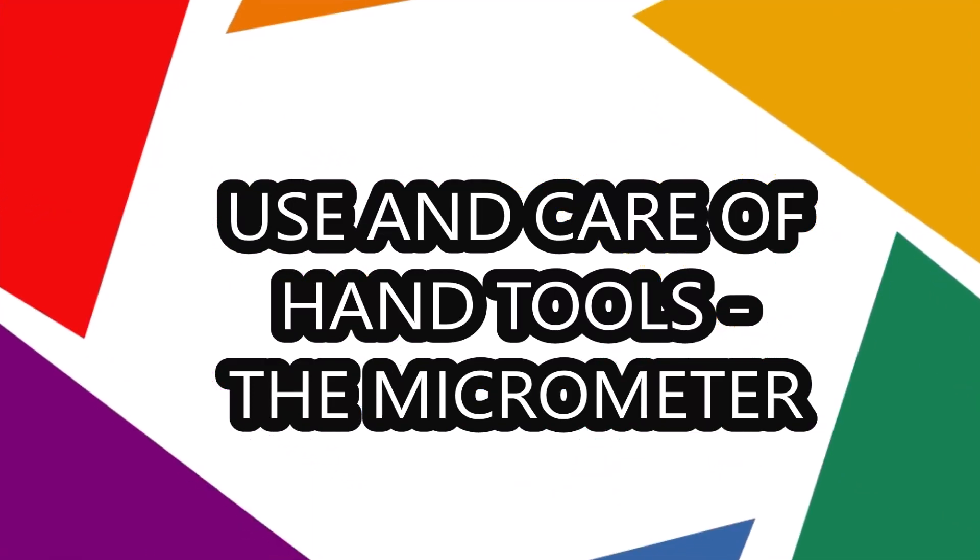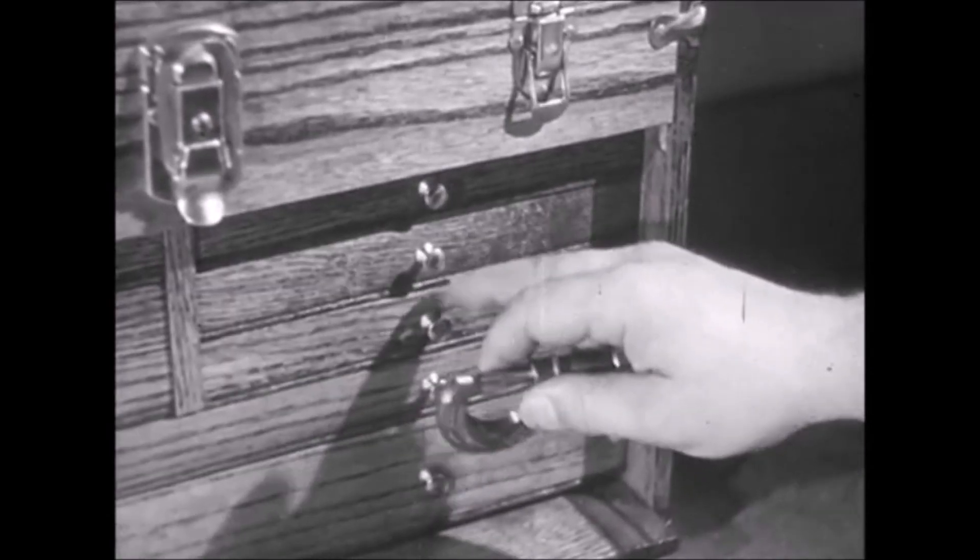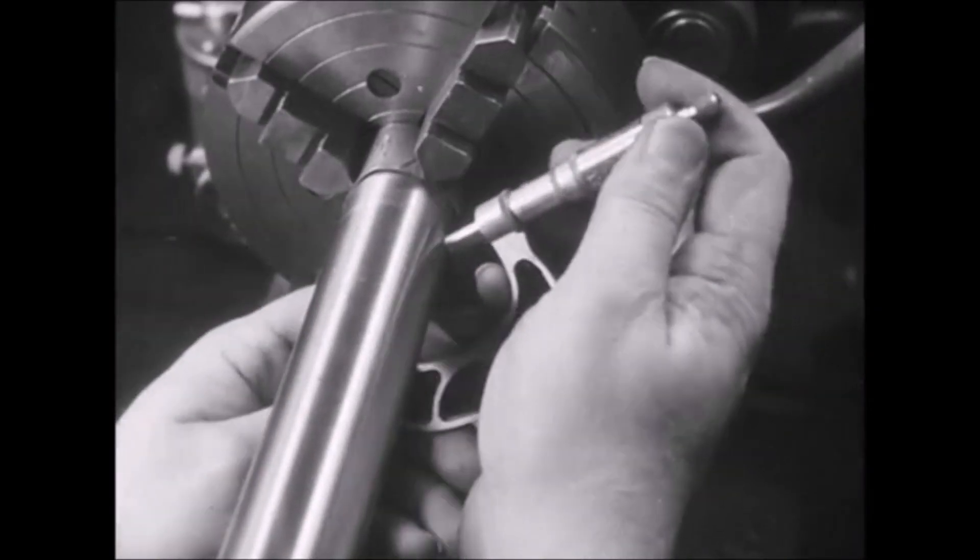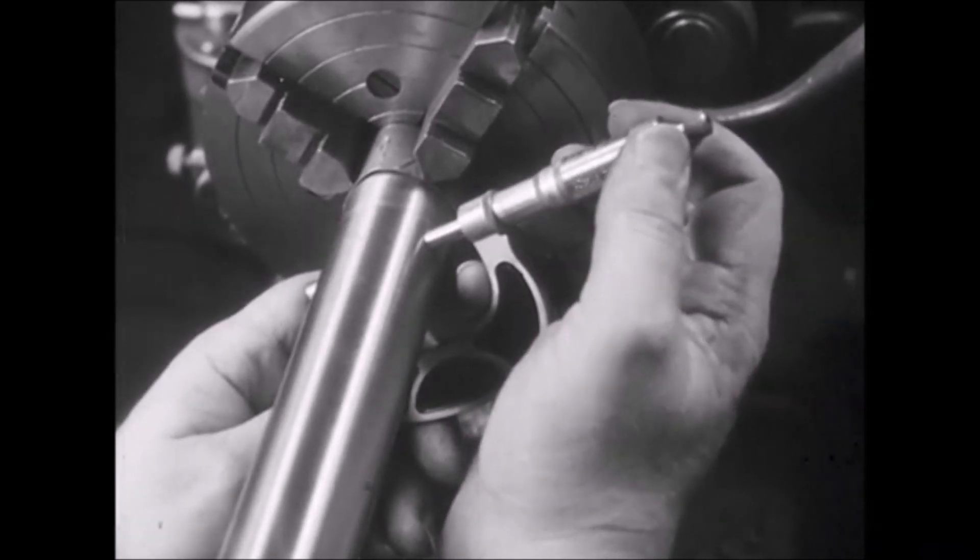Using care of hand tools, the micrometer. The most important measuring tool in machine shop work is the micrometer caliper, used to measure variations in size too small for the human eye to see.